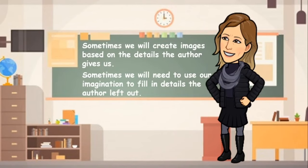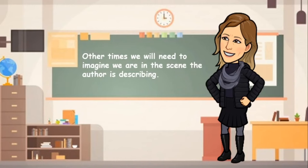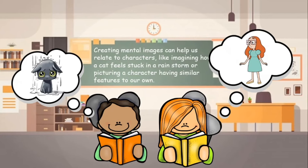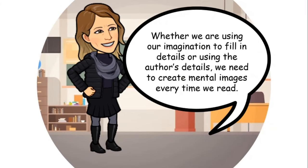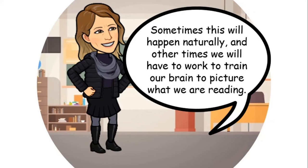Sometimes we will create images based on the details the author gives us. Sometimes we will need to use our imagination to fill in details the author left out. Other times, we will need to imagine we are in the scene that the author is describing. Creating mental images can help us relate to characters, like imagining how a cat feels stuck in the rainstorm, or picturing a character having similar features to our own, such as red hair. Whether we are using our imagination to fill in the details or using the author's details, we need to create mental images every time we read.